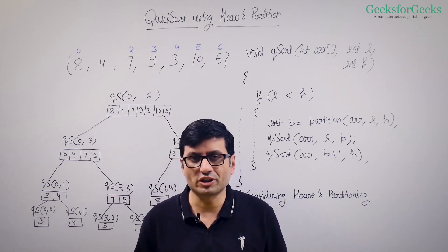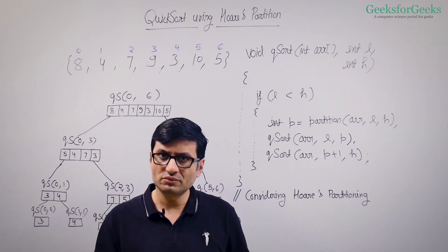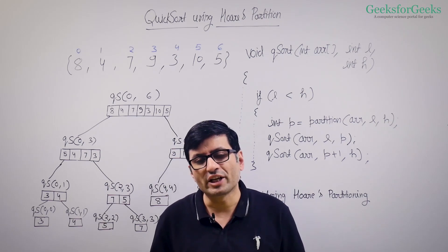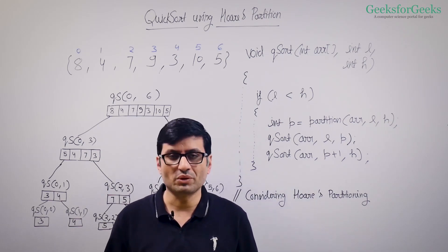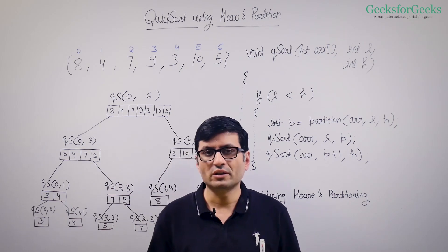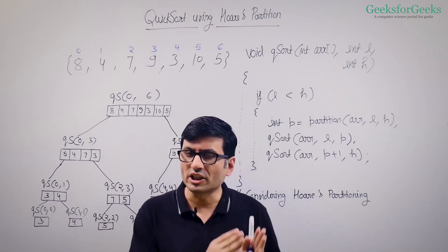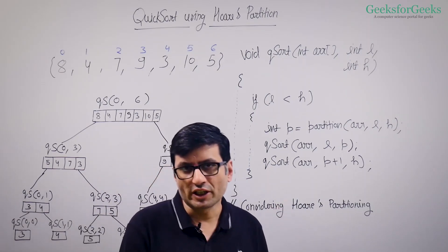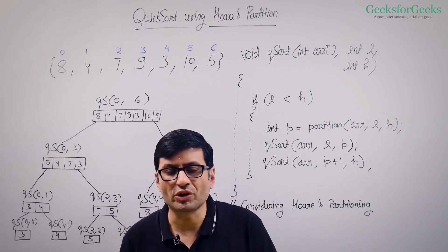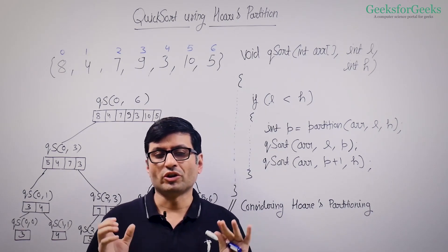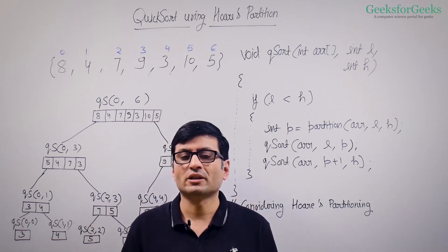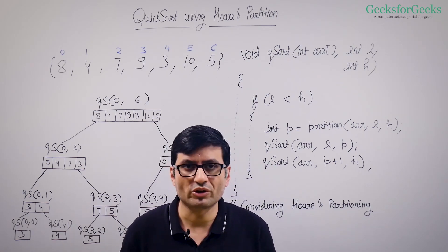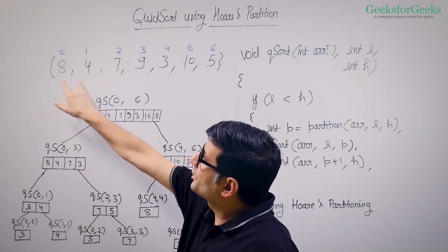The idea of quicksort is this: you have a partition algorithm which takes a pivot and divides your array elements around that pivot. Hoare's partition considers the first element as a pivot — it puts all smaller than or equal elements on the left side and all greater than or equal elements on the right side. Your different partitions can then be sorted independently and your whole array becomes sorted.